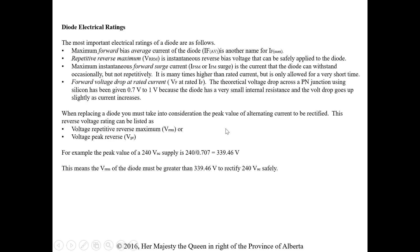When replacing a diode, you must consider the peak value of the alternating current to be rectified. The reverse voltage rating can be listed as voltage repetitive reverse maximum or voltage peak reverse. If we're given an RMS value, we have to calculate to get the peak or max. For example, a 240-volt AC supply means the diode will actually see almost 340 volts — that's the peak. Take 240 V RMS divided by 0.707 to find the peak. This is what the diode sees when it's reverse biased, so the VRM must be greater than this value to rectify safely.